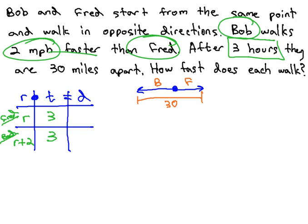We can now calculate their distances algebraically by multiplying the rate times the time. Fred is R times 3, or 3R. Bob is R plus 2 times 3. Notice we're multiplying the entire rate by 3, which requires us to distribute. This gives us 3R plus 6.